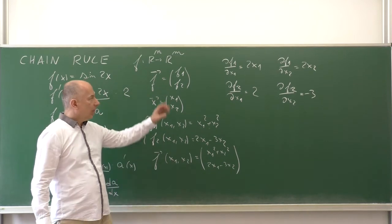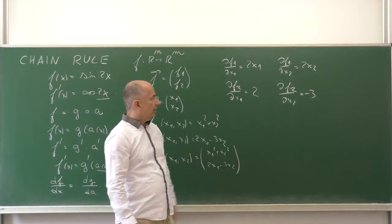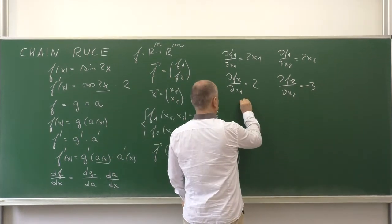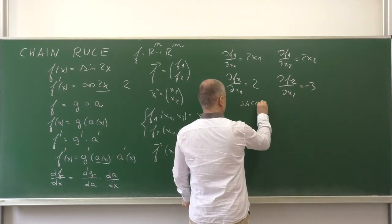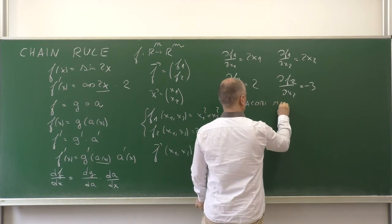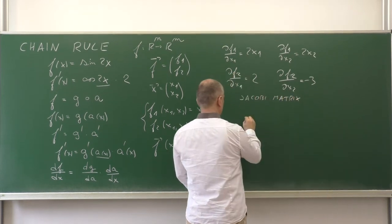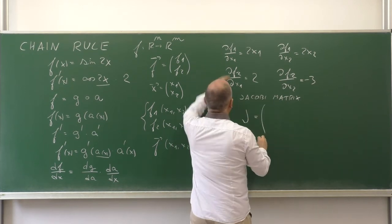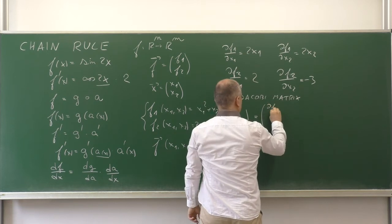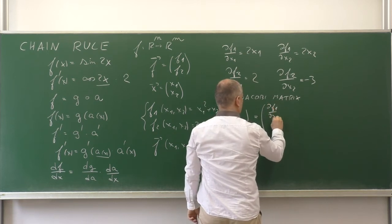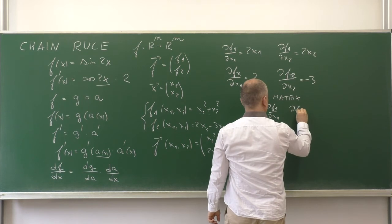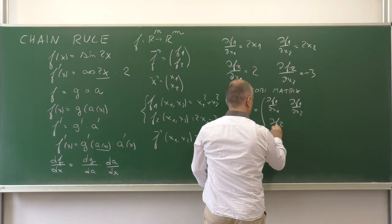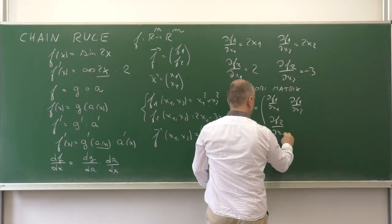Now, it is convenient to write these results, these derivatives, into a single matrix called the Jacobi matrix. And that will be the derivative of the first function with respect to the first argument, the derivative of the first function with respect to the second argument, the derivative of the second function with respect to the first argument, and finally ∂f₂/∂x₂.